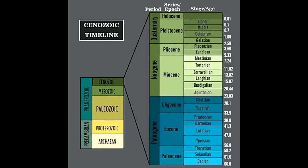Paleogene and neogene were earlier clubbed together as tertiary, and are still sometimes referred to by this name. Paleogene is divided into three epochs — Paleocene, Eocene, and Oligocene. Neogene consists of two epochs — Miocene and Pliocene — whereas quaternary is divided into Pleistocene and Holocene, the latter being the current epoch.